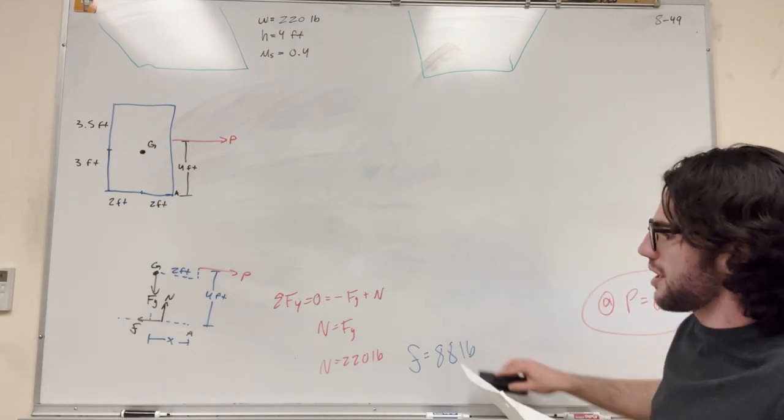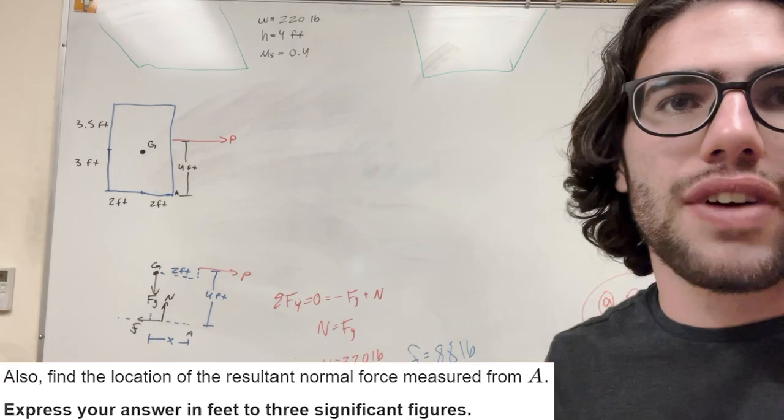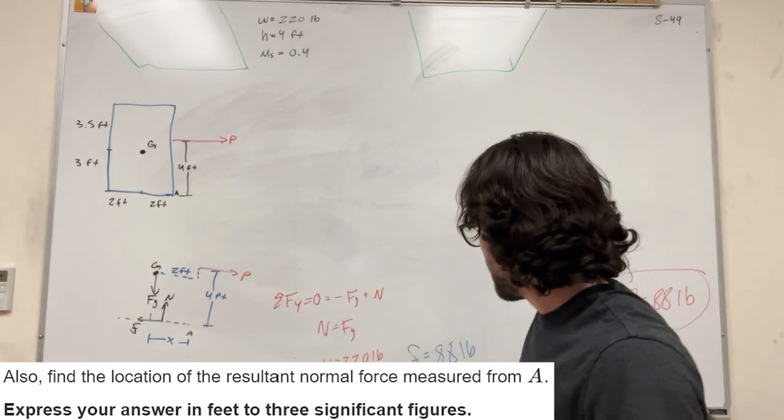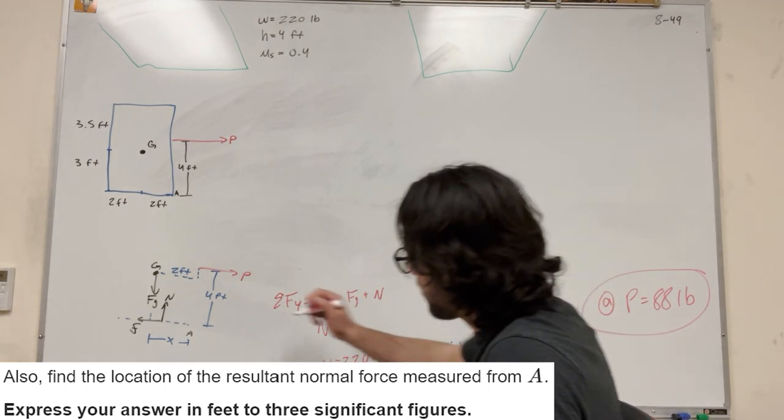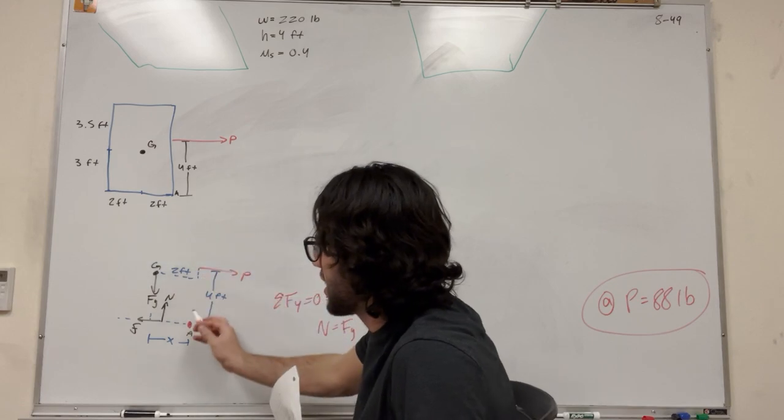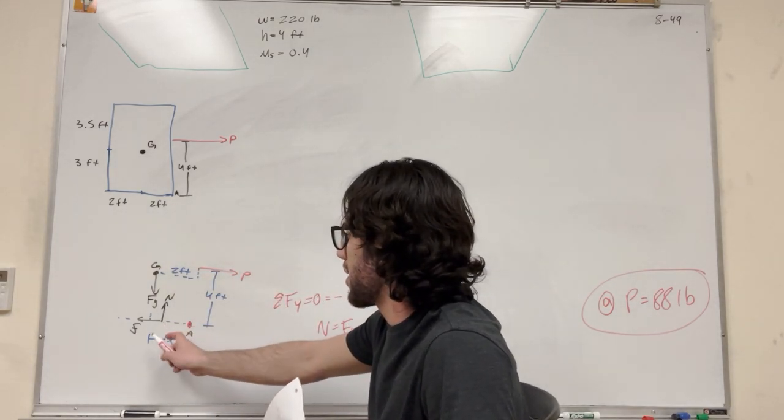Great. So now we can go ahead and solve part two. Find the location of the result of normal force measured from A. Okay, so let's go ahead and do that. So back to our force body diagram. A is here.